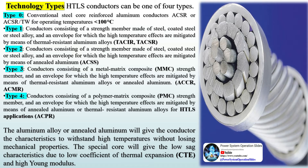HTLS conductors can be one of four types. Type 0: conventional steel core reinforced aluminum conductors (ACSR or ACSR-TW) for operating temperatures less than 100°C. Type 1: conductors consisting of a strength member made of steel, coated steel, or steel alloy, and an envelope for which the high-temperature effects are mitigated by means of thermal-resistant aluminum alloys (ACSR). Type 2: conductors consisting of a metal matrix composite (MMC) strength member, and an envelope for which the high-temperature effects are mitigated by means of thermal-resistant aluminum alloys or annealed aluminum (ACSR-ACMR).